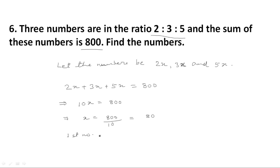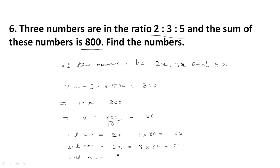So the numbers are: first number is equal to 2x, which is 2 multiplied by 80, equal to 160. Second number is equal to 3x, which is 3 multiplied by 80, equal to 240. And the third number is equal to 5x, which is 5 multiplied by 80, equal to 400. So the three numbers are 160, 240, and 400.